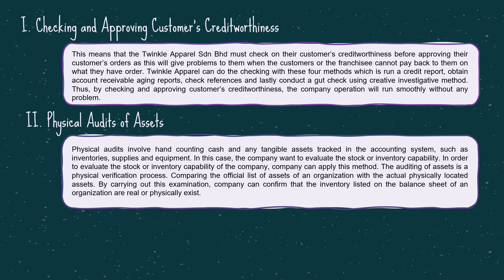Firstly, checking and approving customer credit worthiness. Twinkle Apparel Sedan Berhad must check their customer's credit worthiness before approving orders, because it will cause problems when the customer or franchisee cannot pay back for what they have ordered. Twinkle Apparel can do this checking through four methods: run a credit report, obtain accounts receivable aging reports, check references, and conduct a background check using creative investigative methods.